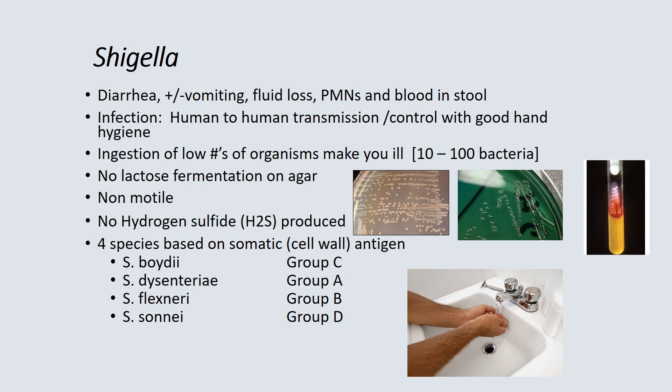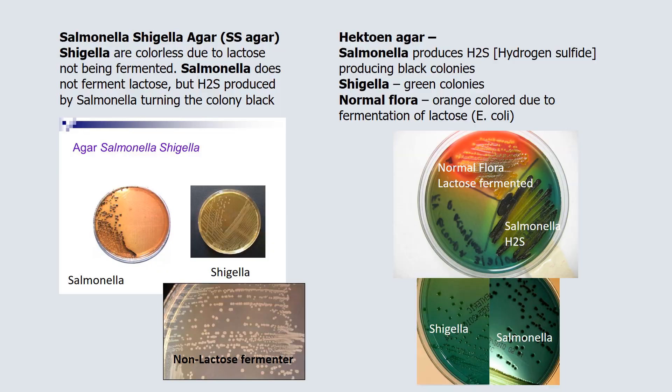Shigella is a pathogen of diarrhea and can cause vomiting, leading to significant fluid loss, particularly in young children. It can also cause PMNs and blood in the stool. Infection is usually human-to-human transmission, controlled with good hand hygiene. Unlike Salmonella, it takes very few organisms of Shigella to make you ill. It does not ferment lactose, is non-motile, produces no hydrogen sulfide, and there are only four species.